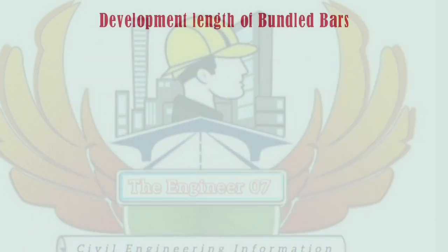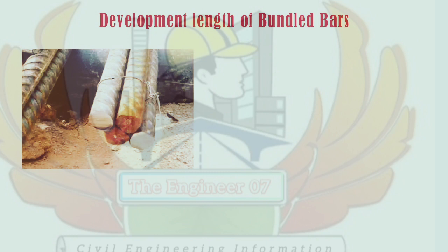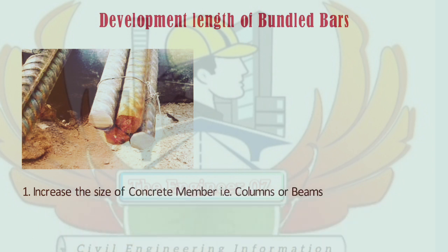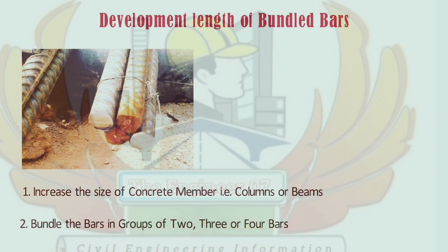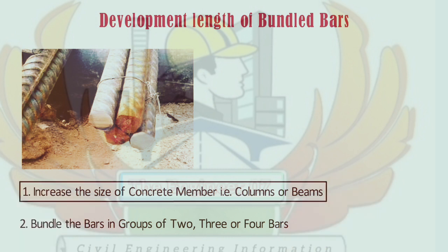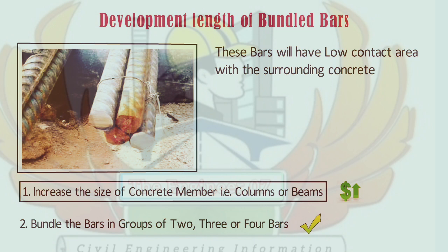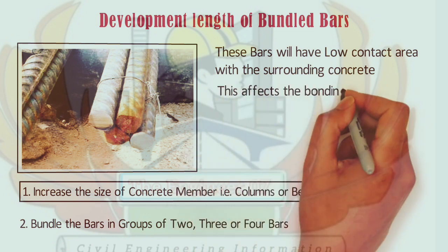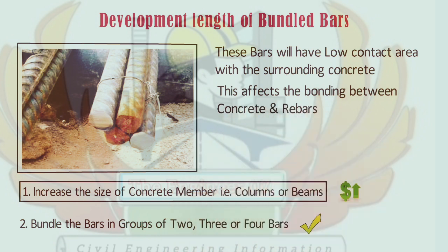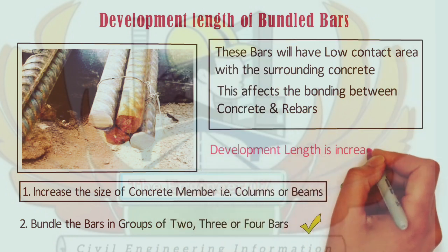Now, development length of bundled bars. When a large number of bars are required based on design, it may not be possible to place the bars separately with necessary clearance. In such cases there are two options: Option 1 — increase the size of the concrete member, i.e. column or beam; Option 2 — bundle the bars in groups of 2, 3, or 4 bars. Increasing the size of the concrete member has cost implications, so it is better to go with Option 2. If bars are bundled, they have a lower contact area with the surrounding concrete compared to bars placed separately, which affects bonding between concrete and rebars. To compensate for this, the development length is increased suitably.